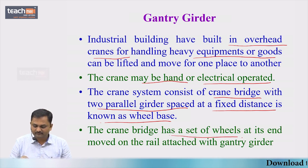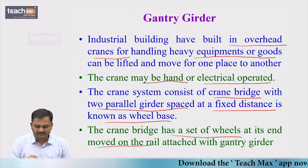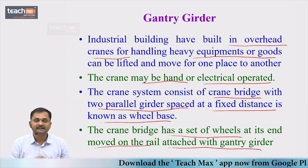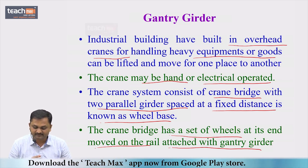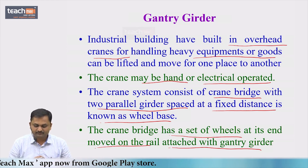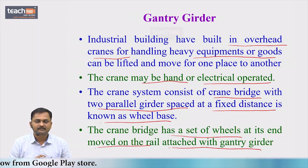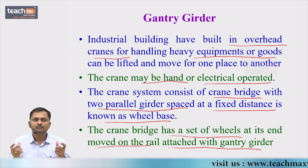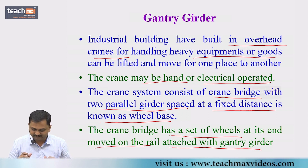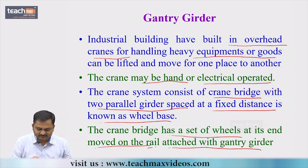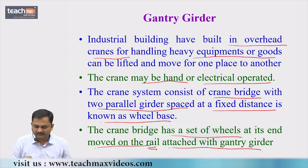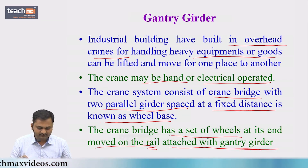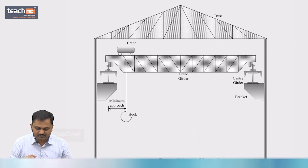The crane girder has a set of wheels at its ends which move on rails attached to the gantry girder. The crane girder rests on the gantry girder at its ends, so wheels are provided to move over it. A rail is provided over the gantry girder for this purpose.